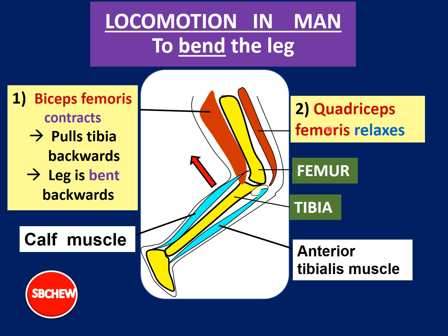At the same time, the quadriceps femoris relaxes, because biceps femoris and quadriceps femoris are called antagonistic muscles. When one contracts, the other will relax — they work in opposite ways. That is the definition of antagonistic muscles.